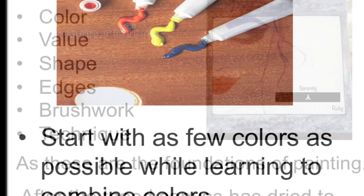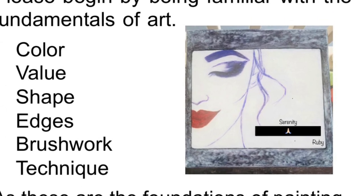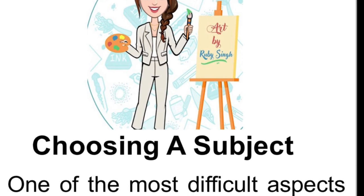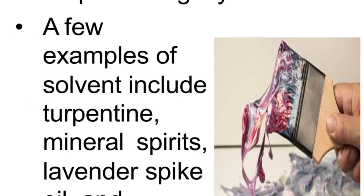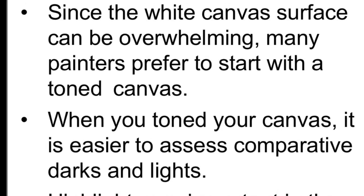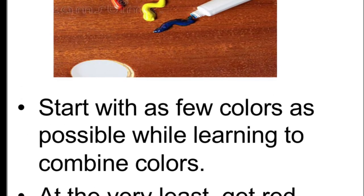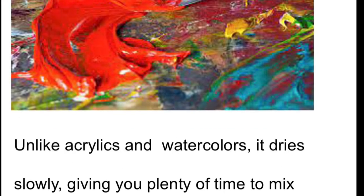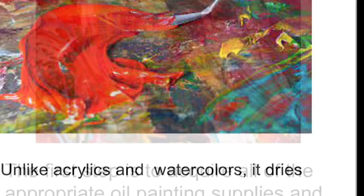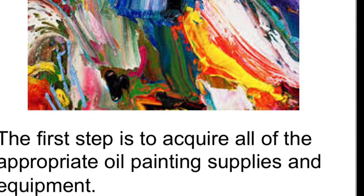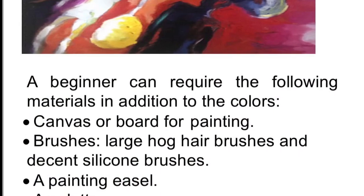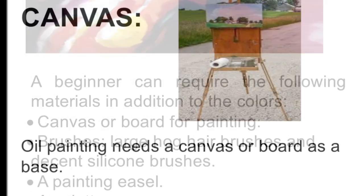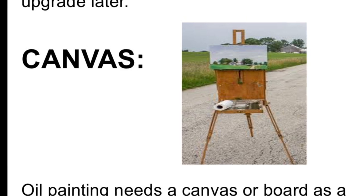Let's talk about the main points for the introduction to oil painting. Number one is to get organized. You have to really organize and have all your stuff ready so you're not just running around. When we get into the mode of painting, you have no time to waste looking for your supplies.